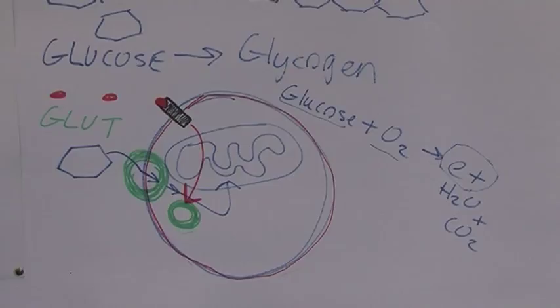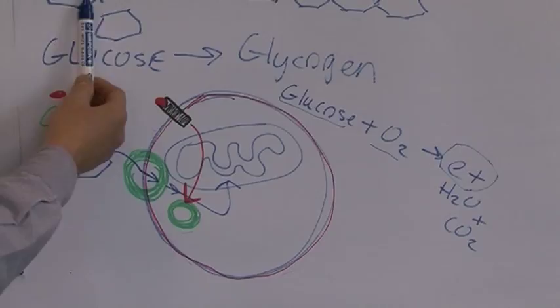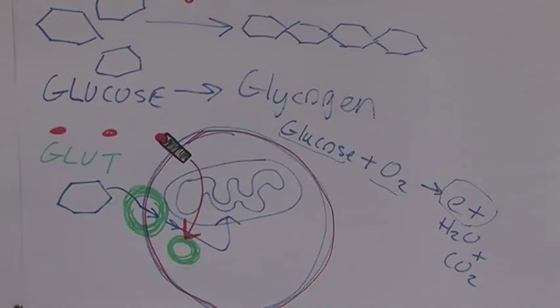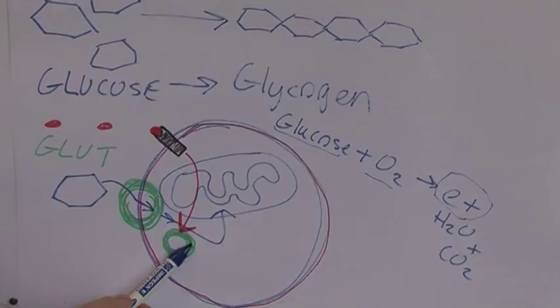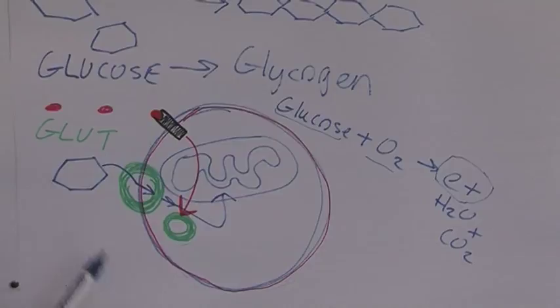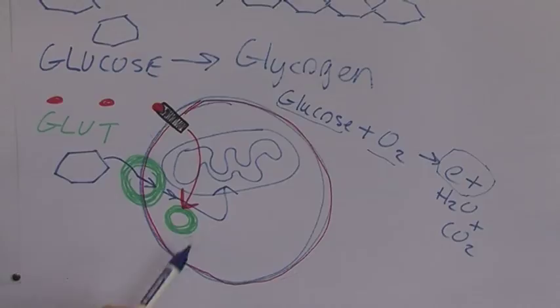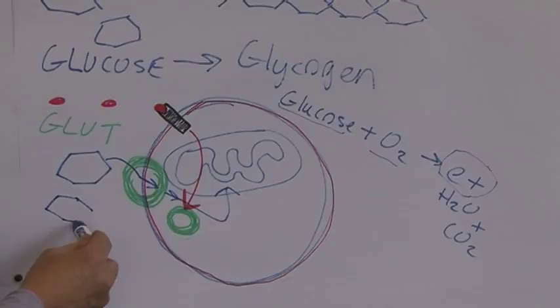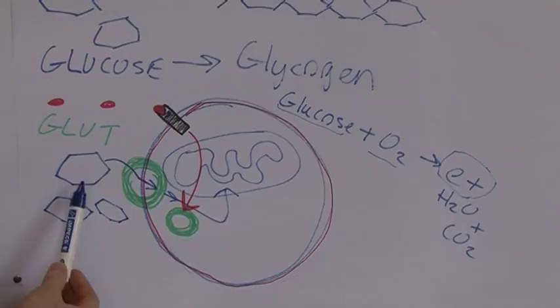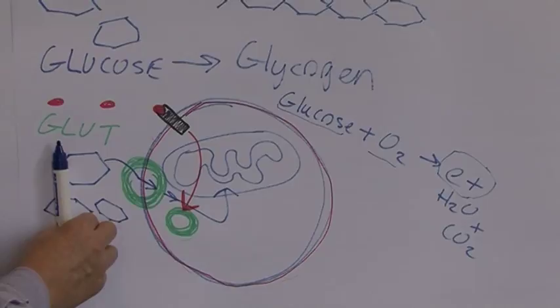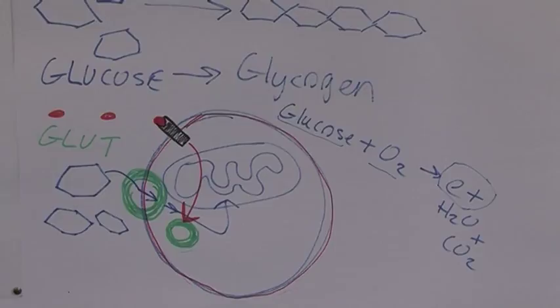So insulin lowers blood glucose by two mechanisms. Firstly, it converts soluble glucose into insoluble glycogen for storage. Secondly, insulin combines with insulin receptor molecules, triggering secondary changes that cause glucose transporter molecules to rise to the surface of the cell — gating the glucose into the cell. The more glucose molecules gated into the cell, the fewer remain in the blood and tissue fluid, therefore the lower blood glucose levels will be.